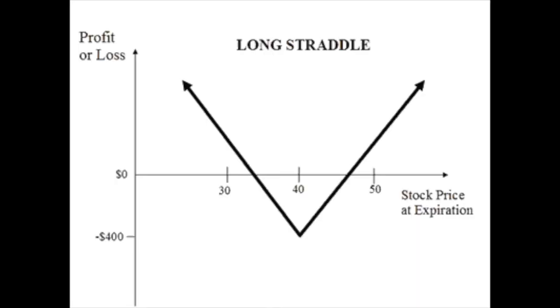But if the stock makes a big move upward, the put option value starts to go down while the call option's potential is unlimited — that's where you make profit. The same applies if the stock drops significantly: the call goes to zero, but the put option can easily do 100-200% moves. The maximum loss per contract is 100%, and the profit potential is unlimited. You have two break-even points, and you profit when the stock makes a large move in one direction or the other.